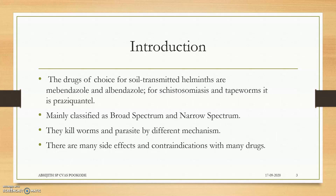There are broad spectrum and narrow spectrum anthelmintics. Broad spectrum means they do not have a narrow specificity — they may act broadly and kill many types of worms by different mechanisms.